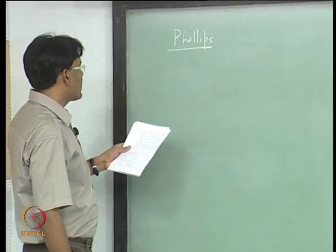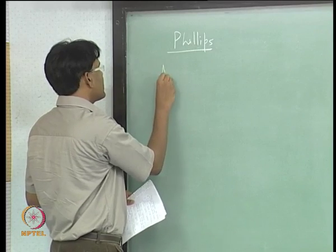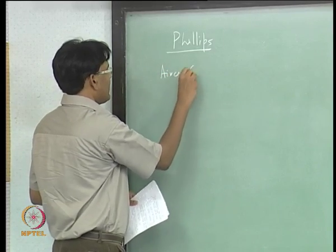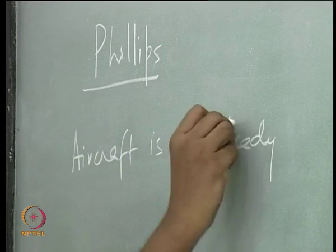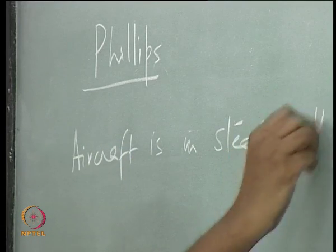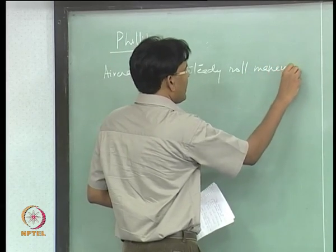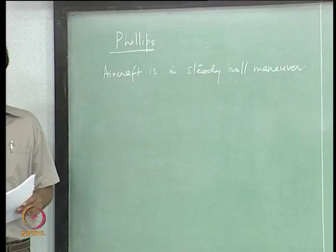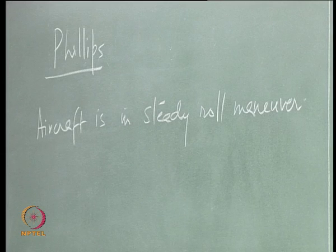What he assumes is the aircraft is in steady roll maneuver. Here rates are not zero like the case we have seen earlier. So rates are involved here and the equations of motion are coupled.